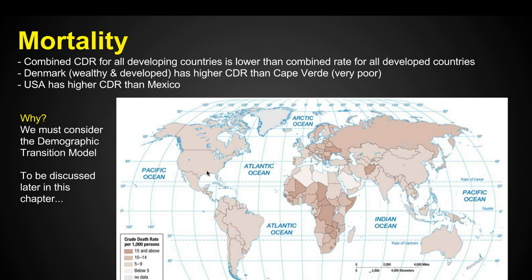For example, Denmark — which is wealthy and developed — has a higher death rate than Cape Verde, which is very poor. That's because Cape Verde is developing and people are living longer, while in Denmark you've got an aging older population where people are dying, and it's a larger population.